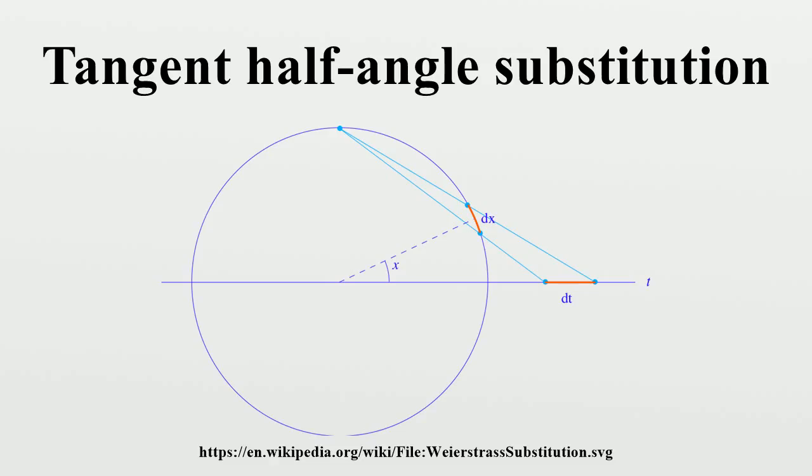Geometry. As x varies, the point winds repeatedly around the unit circle centered at the origin. The point goes only once around the circle as t goes from minus infinity to plus infinity, and never reaches the point, which is approached as a limit as t approaches plus or minus infinity.